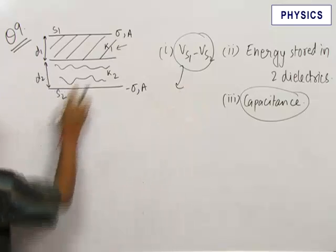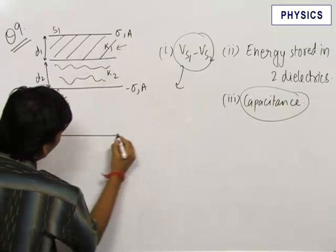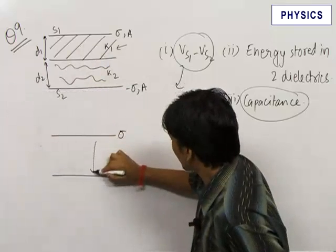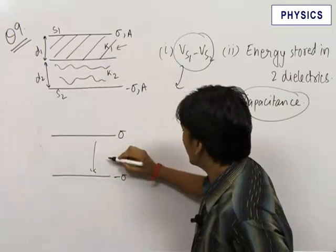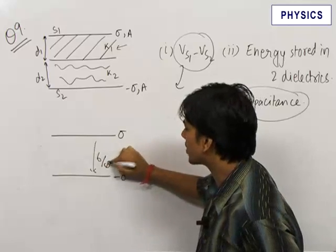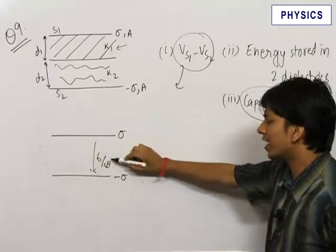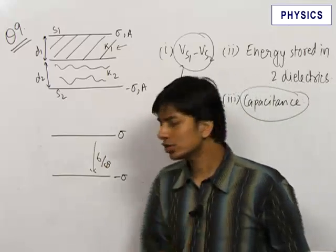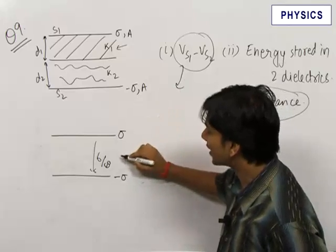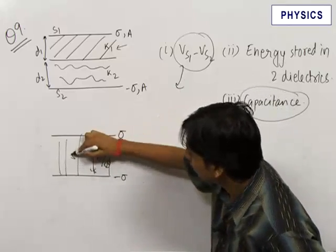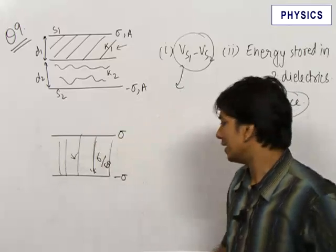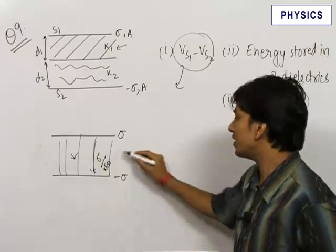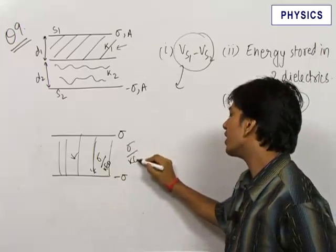Let us solve the first part using the concept of dielectrics. The electric field with no dielectric is equal to sigma upon epsilon_0, directed from positive charge to negative charge. When a dielectric of constant k is introduced throughout the region, the electric field is reduced by a factor of k, so the electric field simply becomes sigma upon k·epsilon_0.